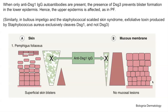Similarly, we also see superficial blisters in other conditions including bullous impetigo and staphylococcal scalded skin syndrome, because in these conditions the toxin produced targets and cleaves predominantly DSG1.